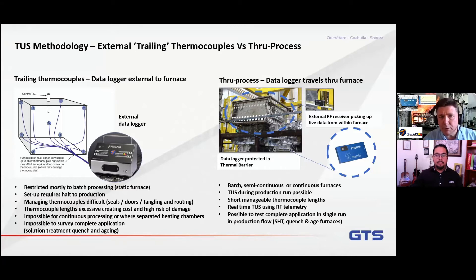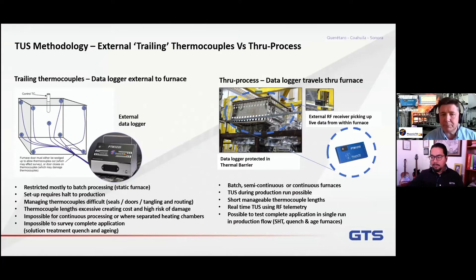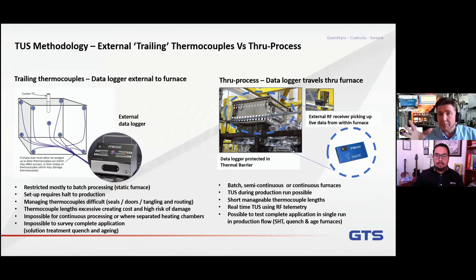That's where the through-process technology comes in. Because the barrier is traveling with the product in the product basket, everything is contained, so it can travel from one section to another without any risk of things getting tangled or caught up. The big question people will ask is, don't I need live data to do a survey? With a trailing thermocouple, that's possible because you're connecting the thermocouple to the data logger and there's generally a display or PC monitor where you can see the data. The through-process technology achieves this using radio telemetry.